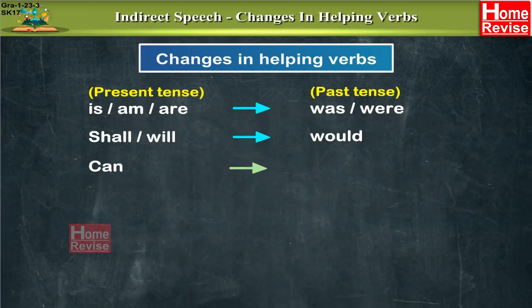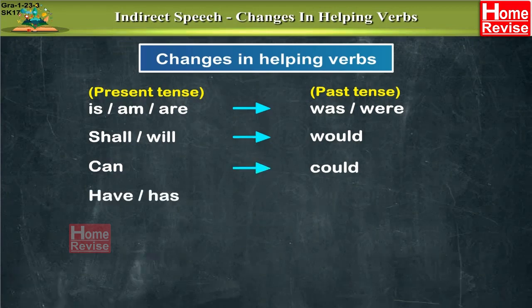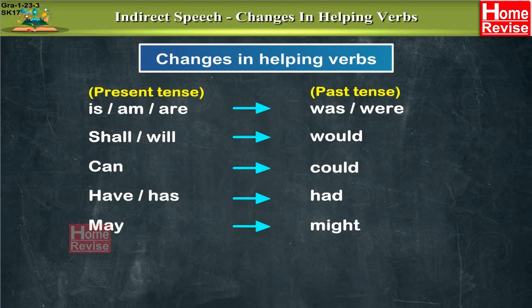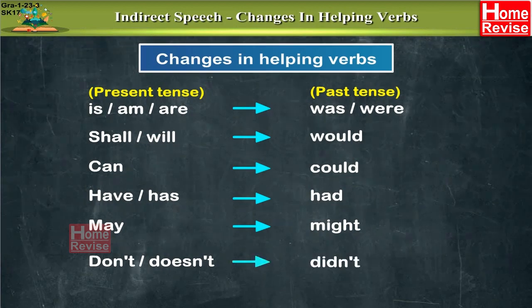'Can' changes to 'could' — 'could' is the past tense form of 'can'. 'Have' and 'has', again present tense verbs, change into 'had', which is the past tense of both 'have' and 'has'. 'May' changes into 'might'. 'Don't' and 'doesn't' change into 'didn't'. These are the changes which happen in helping verbs.